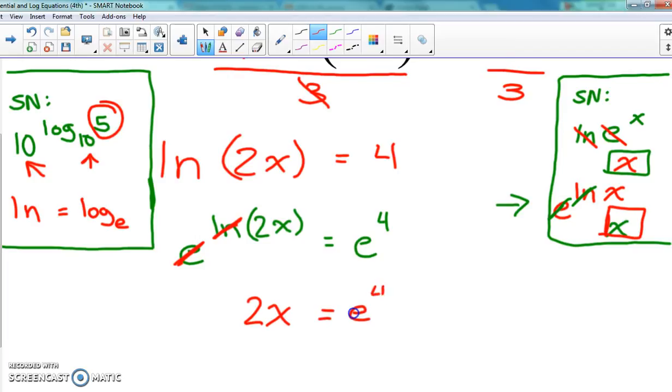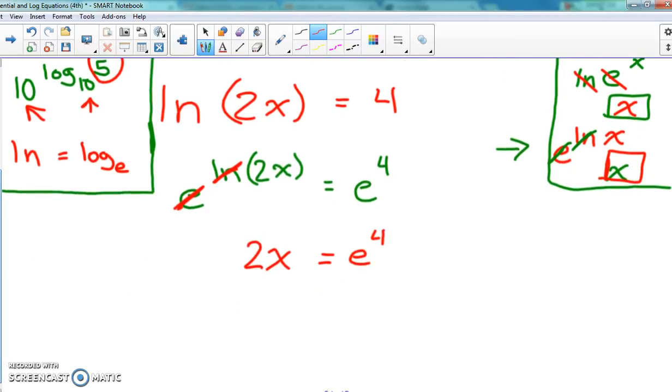We just divide by 2 to get x by itself, and we get e to the fourth over 2. All we're going to do is put e to the fourth over 2 into the calculator and get a decimal answer.